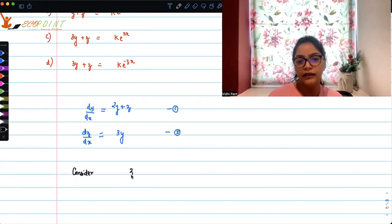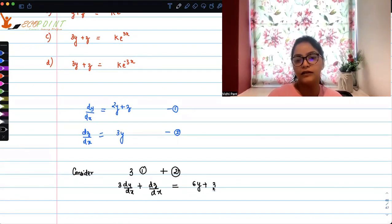So you consider 3 times equation 1 plus equation 2, that is 3 times dy/dx plus dz/dx. So that will be equal to 6y plus 3z plus 3y, that is equal to 9y plus 3z.